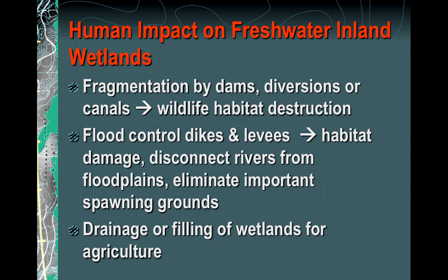Human impacts do affect our freshwater wetlands. We've seen fragmentation by building dams and canals, which destroys habitat and dries wetlands out. Creating levees or flood control dikes also redirects water flow. We also see drainage and filling of wetlands for agricultural land use — this is a significant problem.